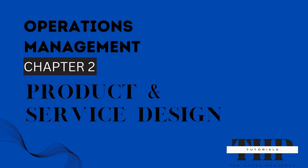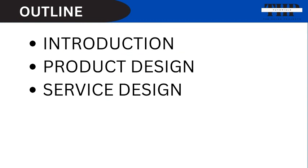We will learn about product and service design in this chapter. We will break down the variables that this decision is made up of and how best operations managers may or should go about making these decisions. If you are lost, it will do you a great deal of good to check out the first chapter on operations management. The link is in the description below.